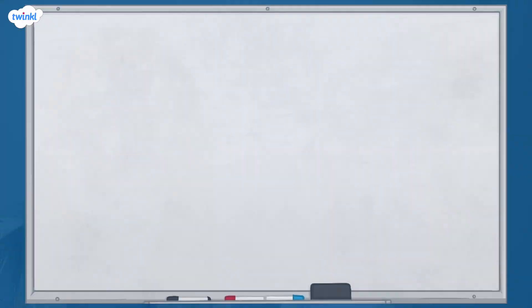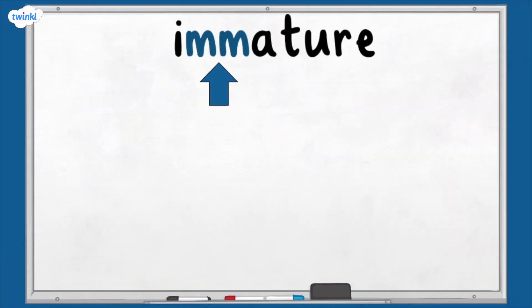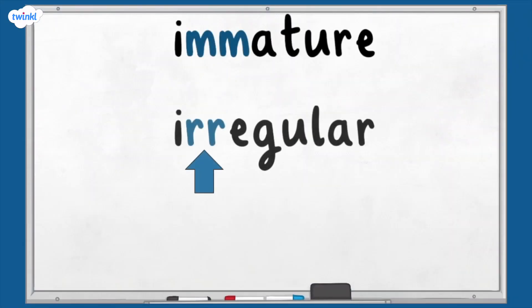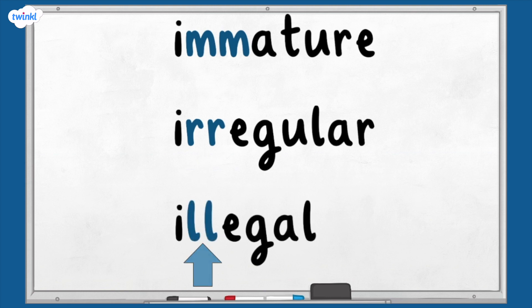It's important to remember that the spelling of a root word does not change when a prefix is added. Quite often, words that have prefixes added have a double letter, like this: immature, irregular, illegal. It is useful to remember this as it can help you when spelling these words.